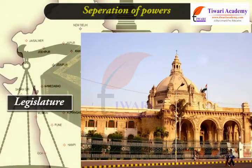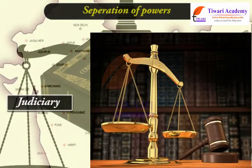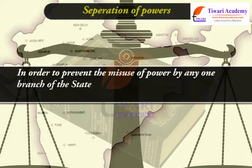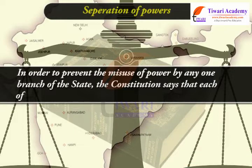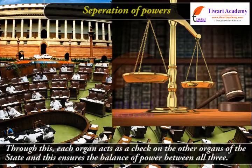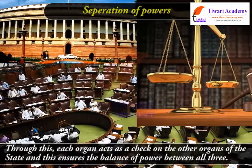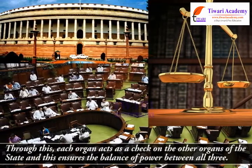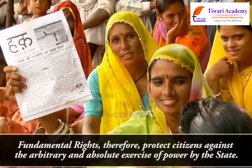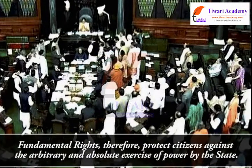Separation of powers. According to the Constitution, there are three organs of the state: the legislature, the executive, and the judiciary. In order to prevent the misuse of power by any one branch, the Constitution says that each of these organs should exercise different powers. Through this, each organ acts as a check on the other organs of the state, ensuring a balance of power between all three.